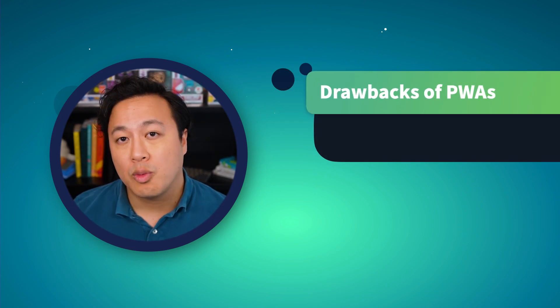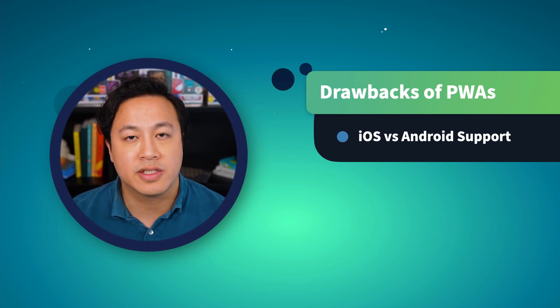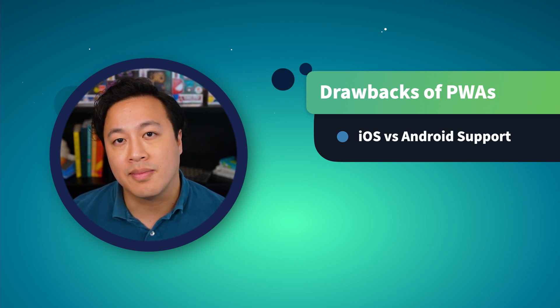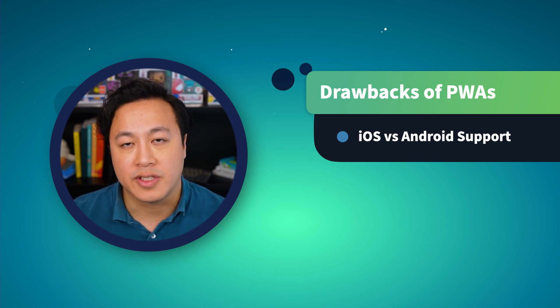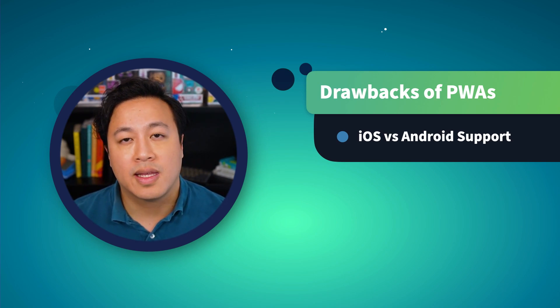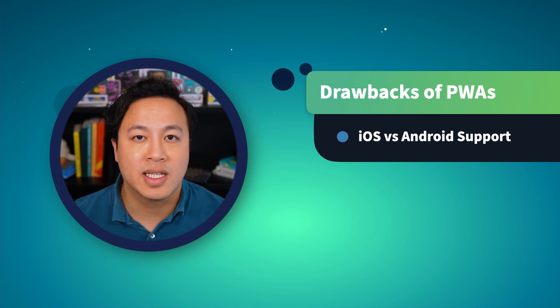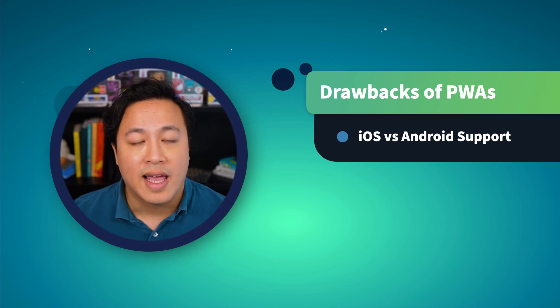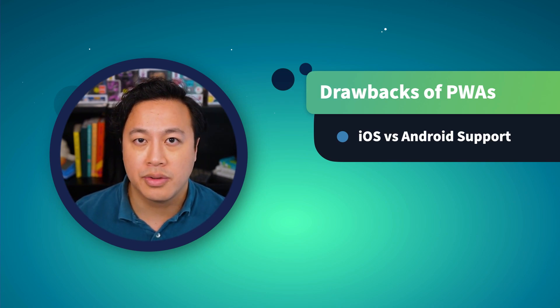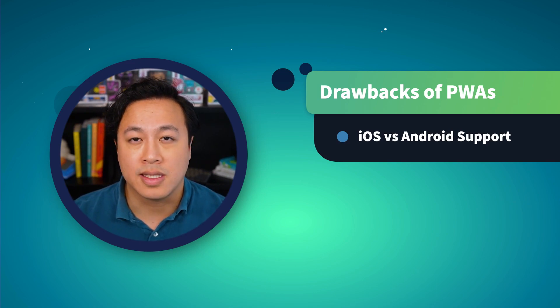Let's take a look at some of the drawbacks of PWAs. While PWAs are great, it's essential to understand that they are not replacements for native apps, nor do they make them obsolete. Since PWAs are not optimized to run on the hardware of a specific device, they have drawbacks in functionality compared to mobile apps. Examples include things like Bluetooth, NFC, and high storage capacity when compared to native apps.